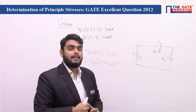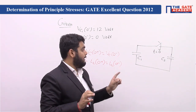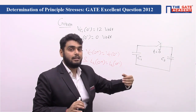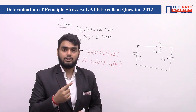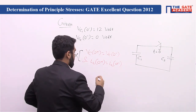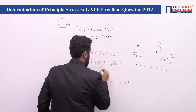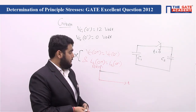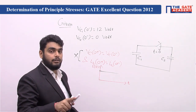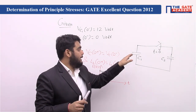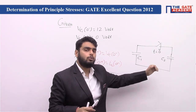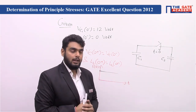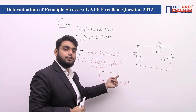For an exponentially decaying current, there must be some resistance present. But the resistance of the network is 0, so the current cannot decay exponentially — which means option C is also wrong. Now we have two remaining options: step function and impulse function. A step function means there is some current till t equal to infinity. But as we discussed, after some time C1 and C2 reach a particular voltage, the potential difference becomes 0, and therefore current becomes 0. So the step function is not the answer.